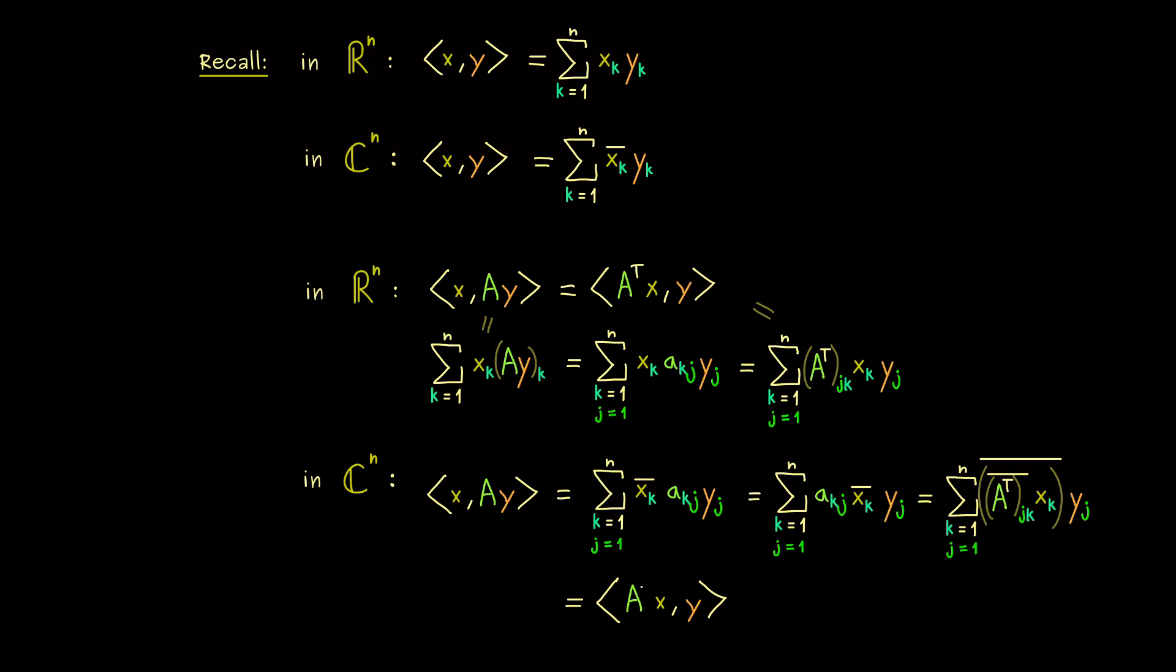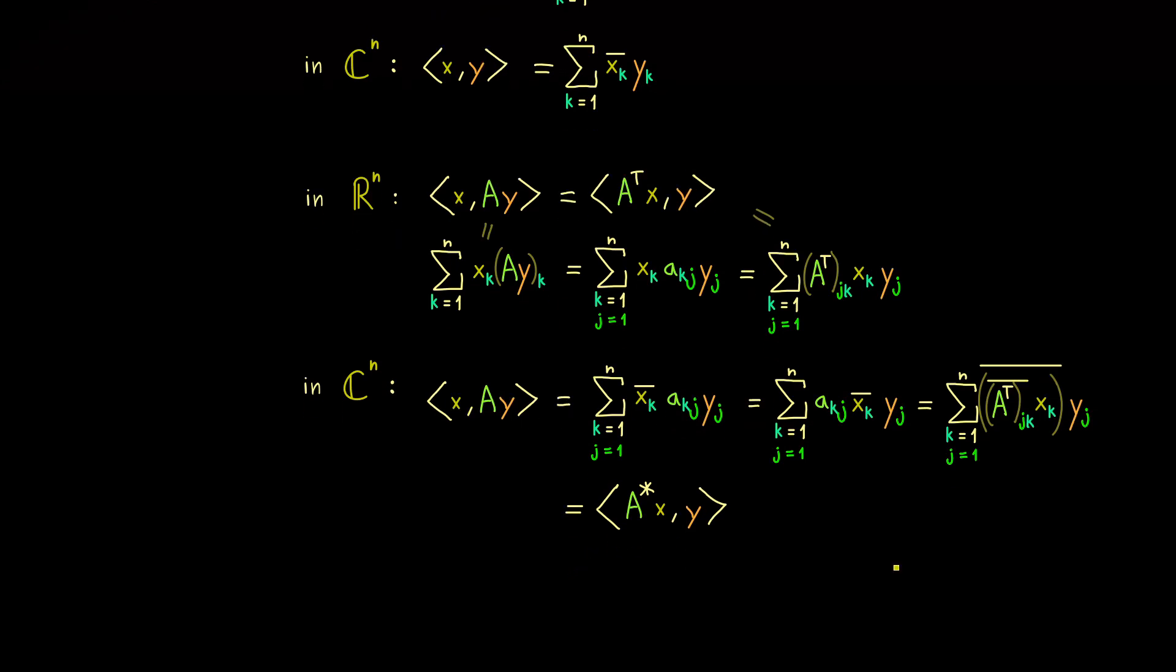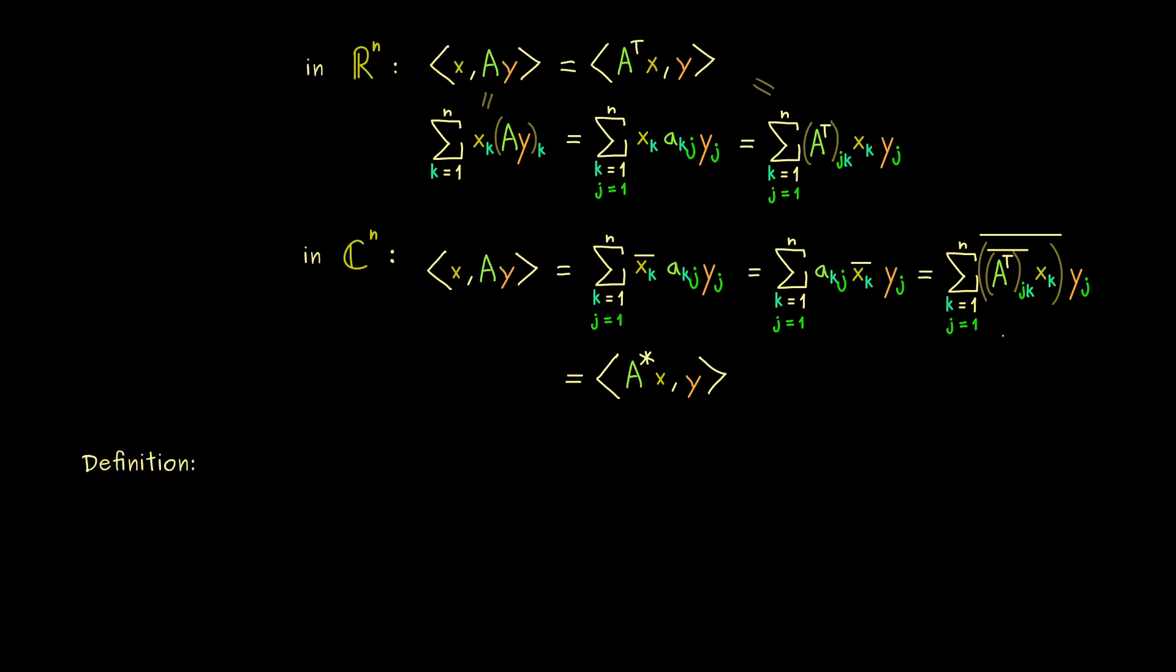And the notation I use for the adjoint matrix is a star. There are also other notations some authors use if the star is not a good choice, but for us here, the star is a very good notation. So if you see a star on a matrix, it means it's the adjoint matrix of the matrix A. However, there are also other names for this adjoint matrix, and often it's called the conjugate transpose. And by the calculation above, you also see why this is also a good name for that.